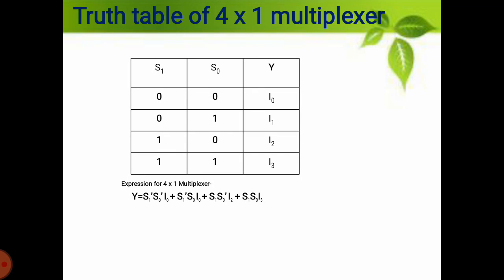Now, the truth table for the 4-to-1 multiplexer. In the first column I have taken S1, in the second column S0, and the output is Y as per the selection line. If the selection line is 0, 0, then the output is i0. If the selection line is 0 and 1, the output is i1, as the binary of 01 is 1.